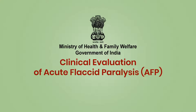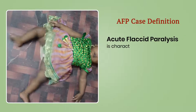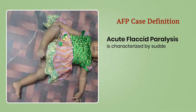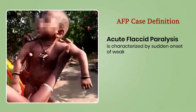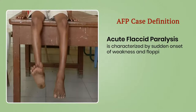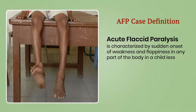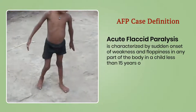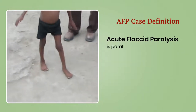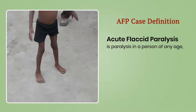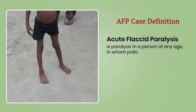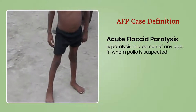In this video, we will learn about the clinical evaluation of an acute flaccid paralysis case. AFP is characterized by sudden onset of weakness and floppiness in any part of the body in a child less than 15 years of age, or paralysis in a person of any age in whom polio is suspected.